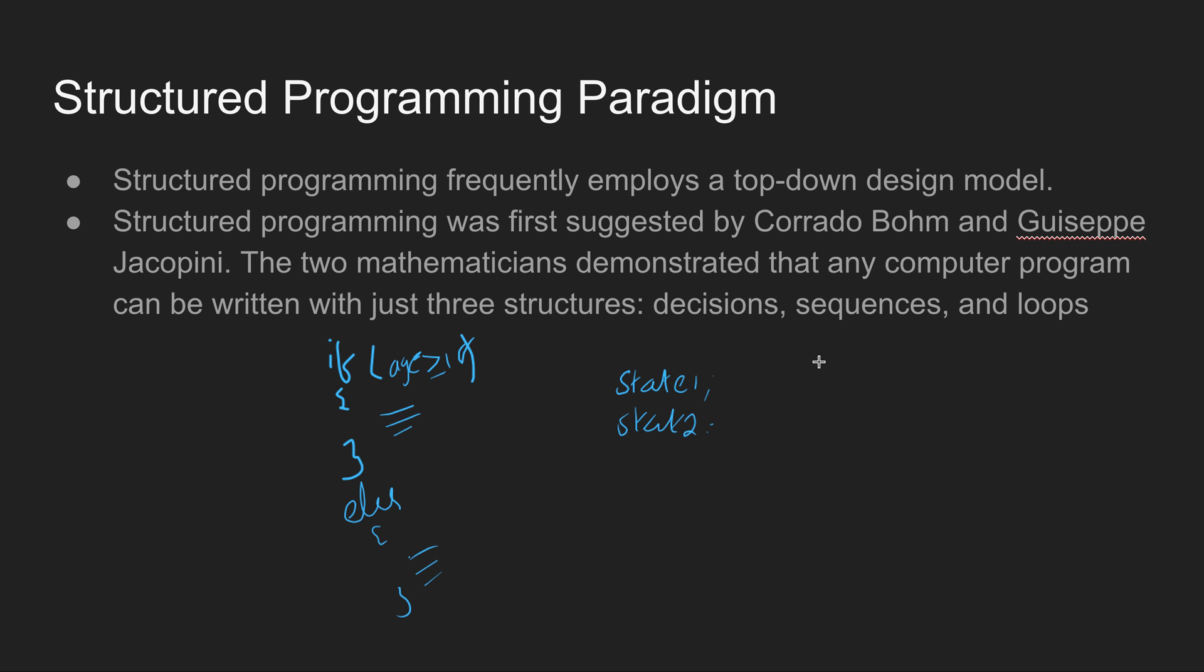Looping means if you want to execute the same set of statements for n number of times, you could use looping statements. For loop is one of the widely used looping statements. If you want to execute three lines for n number of times, that n can be 10, 100, 1000, 10,000, any number, then you can use loops.